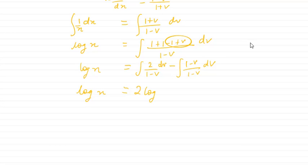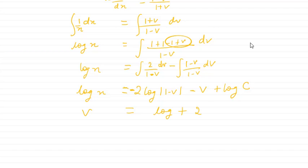Integrating: the left side gives log x, and the right side gives −2·log(1 − v) minus v, plus a constant. Note the negative sign on the log term — students often miss this. I write the constant as log c since everything is in log form. So: log x = −2·log(1 − v) − v + log c.